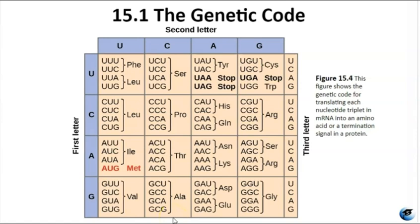The codon AUG has a dual role — it codes for methionine but also acts as the start codon to kick off translation. So AUG is the translation start codon.